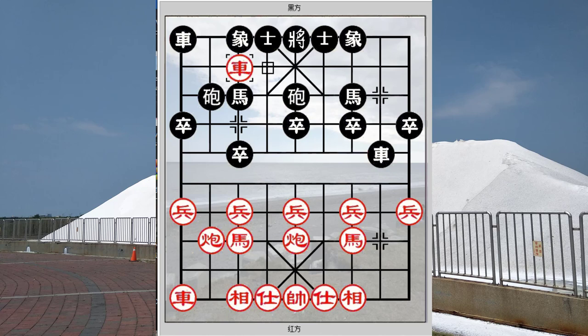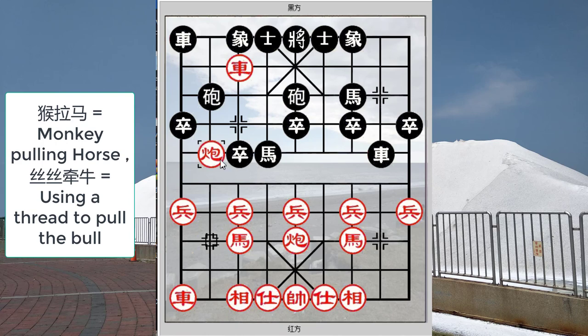However, since black did not counter correctly, red will now play R6=7, which is a very good move at this point. Black would think everything is fine and play H3+4, but black did not appreciate the consequences of this move and will pay a terrible price. A better move would have been H7-5 to retreat the horse to the centroid. Although black's formation would be a little congested, it would still be better than the continuation we are about to see.